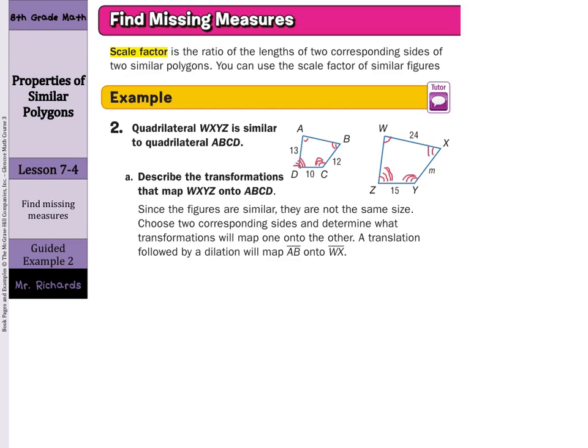Scale factor is the ratio of the lengths of two corresponding sides of two similar polygons. You can use the scale factor of similar figures to find missing measures. Quadrilateral WXYZ is similar to quadrilateral ABCD. Describe the transformations that map WXYZ onto ABCD. Since the figures are similar, they are not the same size. We are going to choose two corresponding sides and determine what transformations will map one onto the other. A translation followed by a dilation will map AB onto WX.